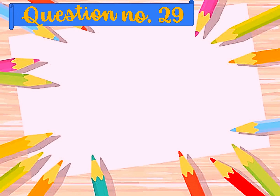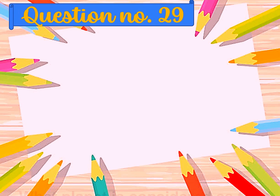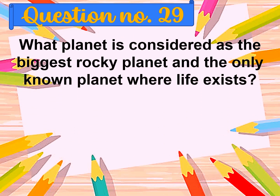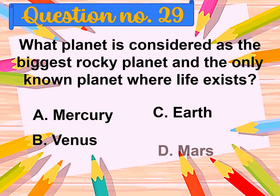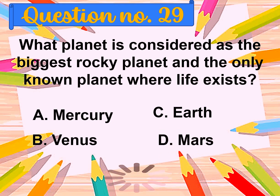Question number twenty-nine: What planet is considered as the biggest rocky planet and the only known planet where life exists? A. Mercury, B. Venus, C. Earth, D. Mars.